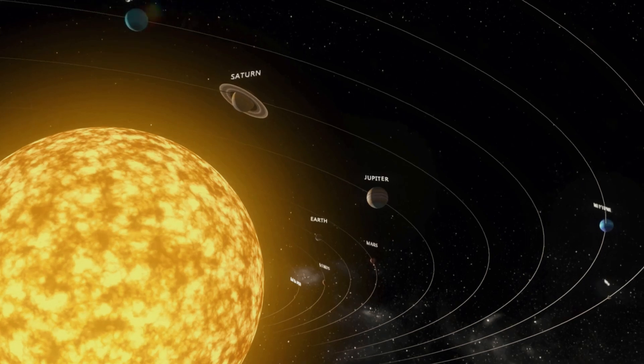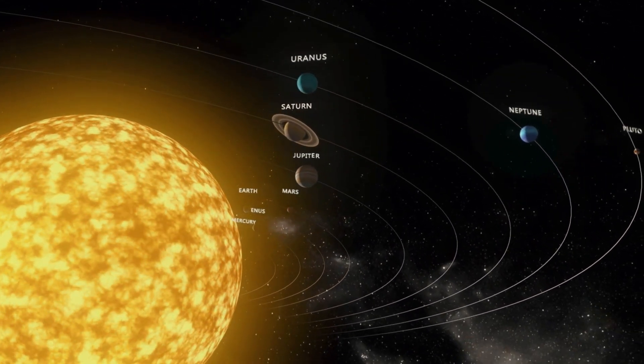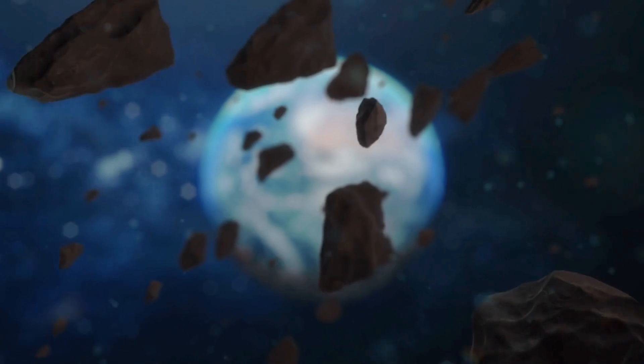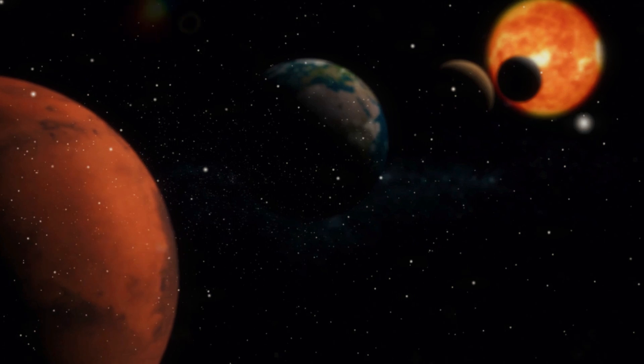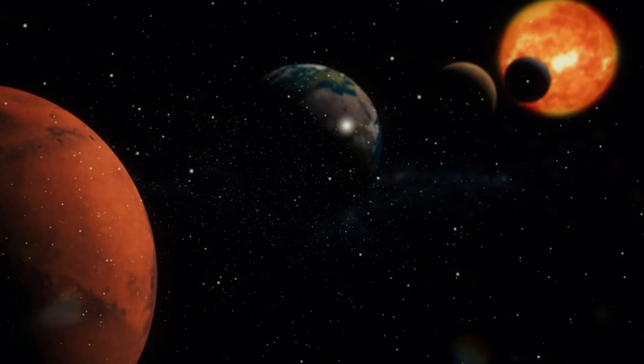And that's just the beginning. Imagine the chaos if other stars and solar systems got close enough to us. A passing star could tear apart the outer planets or even send asteroids crashing into Earth. It's a cosmic game of billiards, and we're stuck on one of the balls. But here's where the real mystery lies: could our solar system somehow escape unscathed?